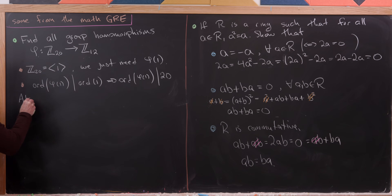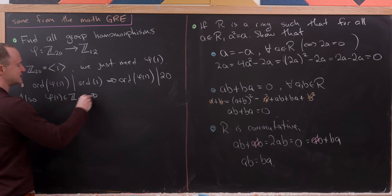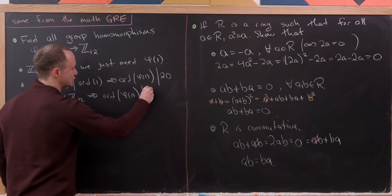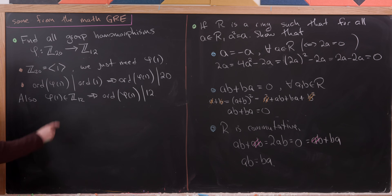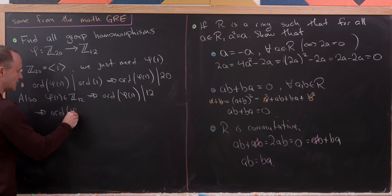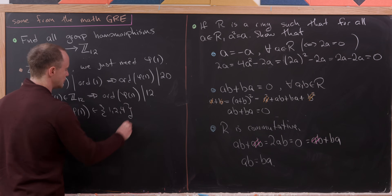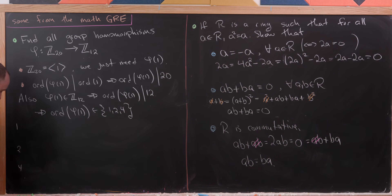Also, since φ(1) is an element of Z₁₂, its order must divide 12 by Lagrange's theorem. So the order of φ(1) must simultaneously divide 20 and 12 — it must be a common divisor of both. Therefore the order of φ(1) is from the set {1, 2, 4}, which are the only common divisors of 12 and 20.